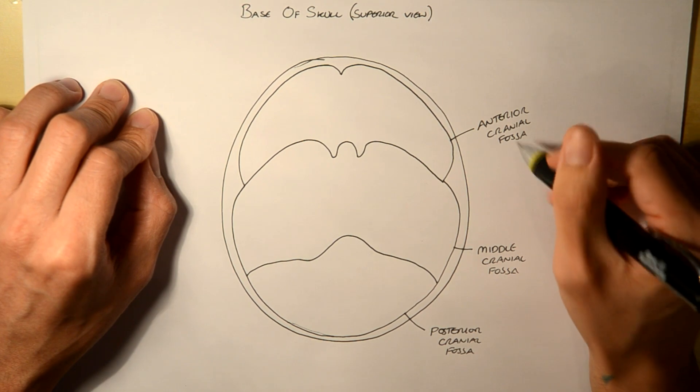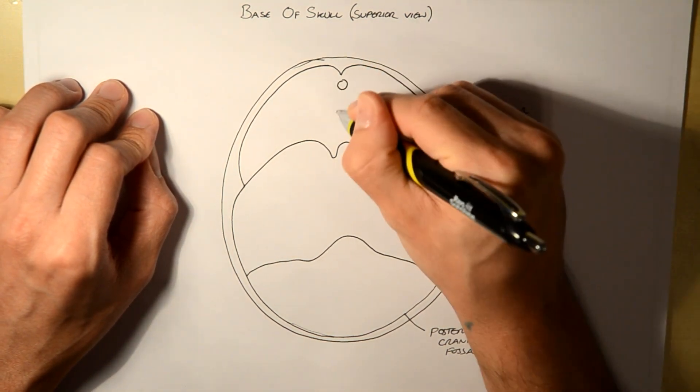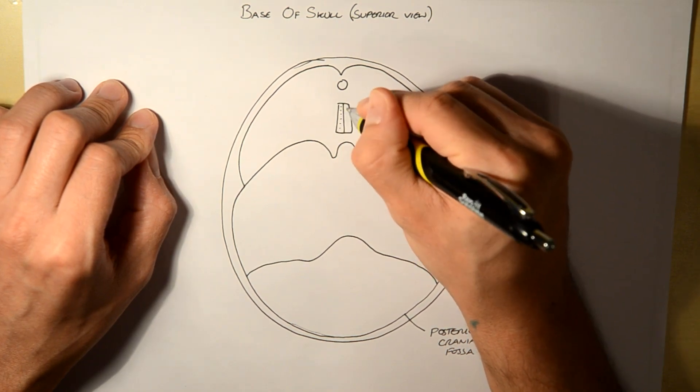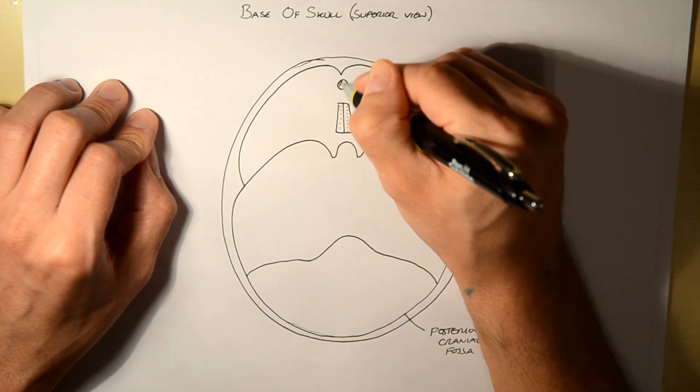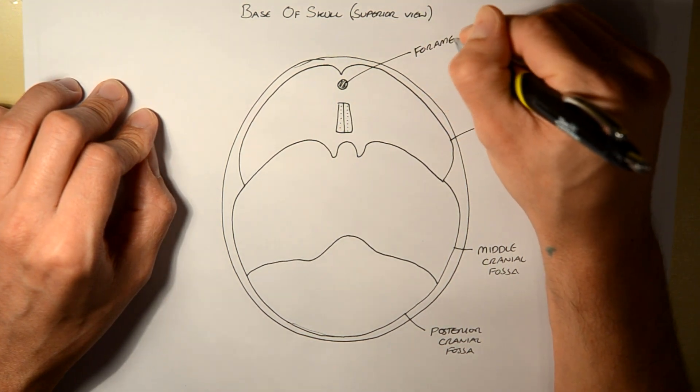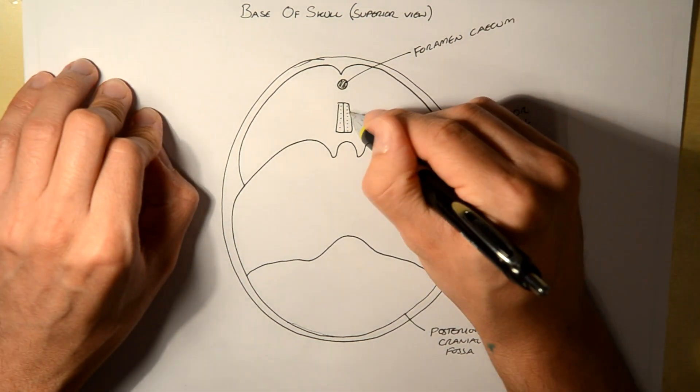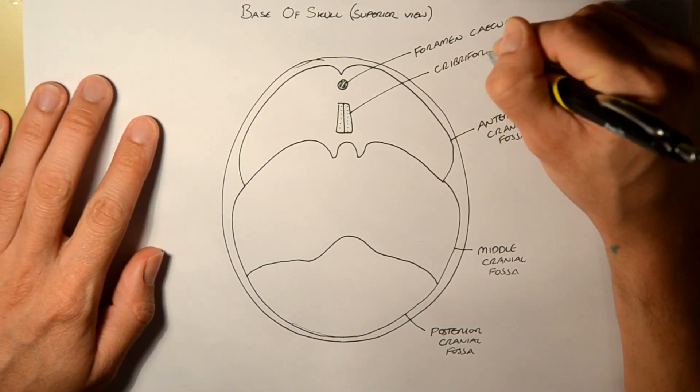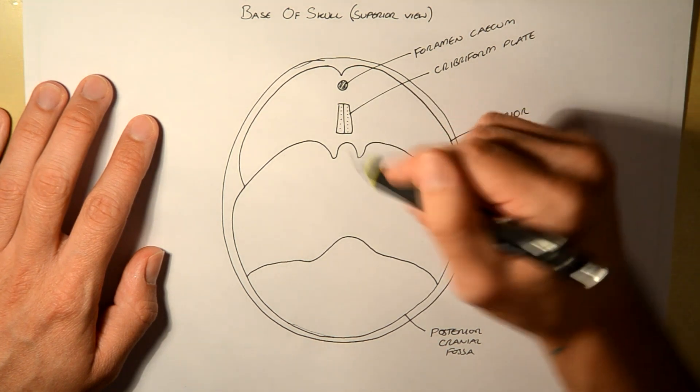The first way is by looking at the anterior cranial fossa. So we need to look at this here, and this plate here, and this plate here. So this is the foramen cecum, and this is the cribriform plate.